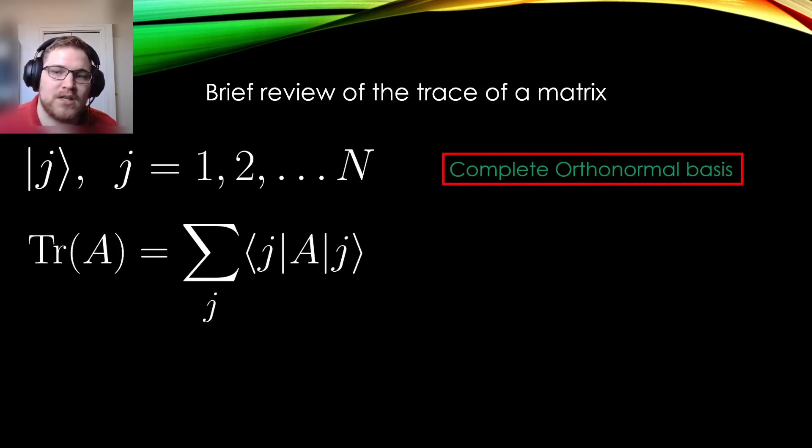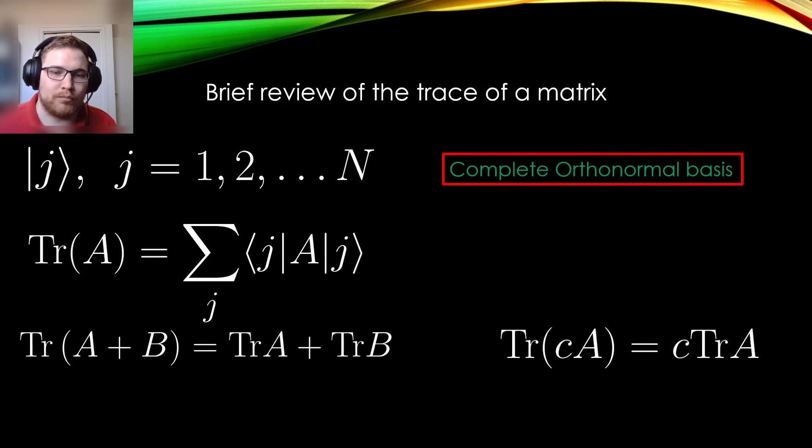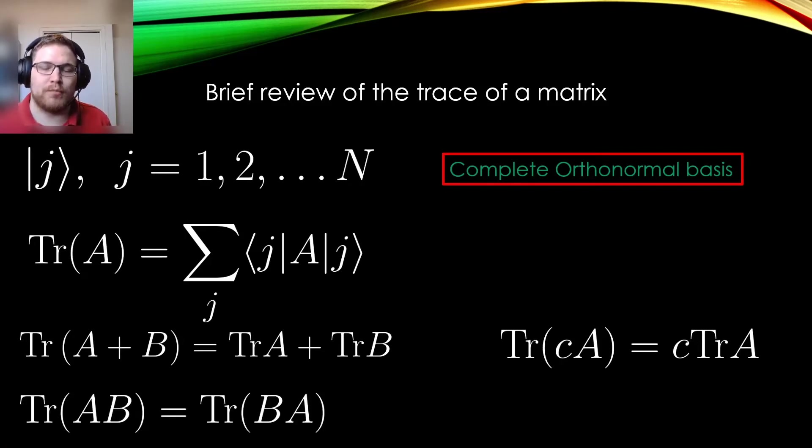The trace is a linear mapping, which tells us that we can separate the trace of the sum of two matrices apart like this, and we can also pull scalar multiples outside of the trace. When I am taking the trace of two matrices multiplied by each other, the trace is invariant under swapping the two matrices inside of the trace.